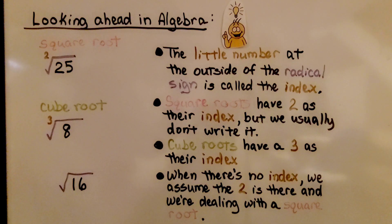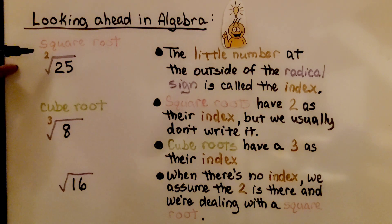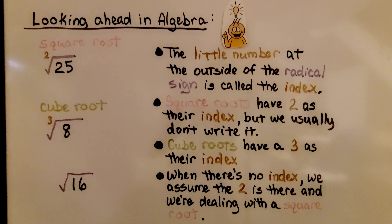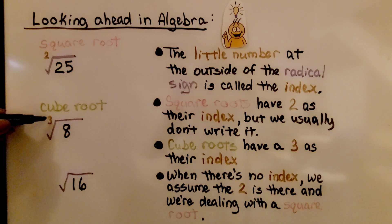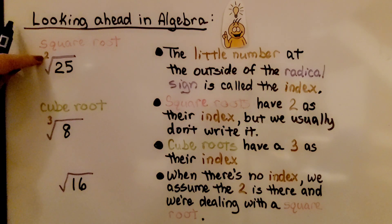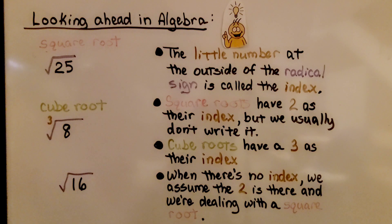Looking ahead in algebra, the little number on the outside of the radical sign is called the index. Square roots have 2 as their index, but we usually don't write it.